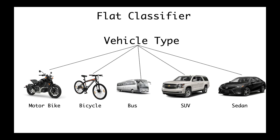Another approach would be to develop a flat classifier. In this case you develop one classifier for all the different types of vehicles. All vehicle types — motorbike, bicycle, bus, SUV, and sedan — are considered at the same level within one classifier. So we will have one classifier for all five classes, and we will not consider any kind of parent-to-child relationship.